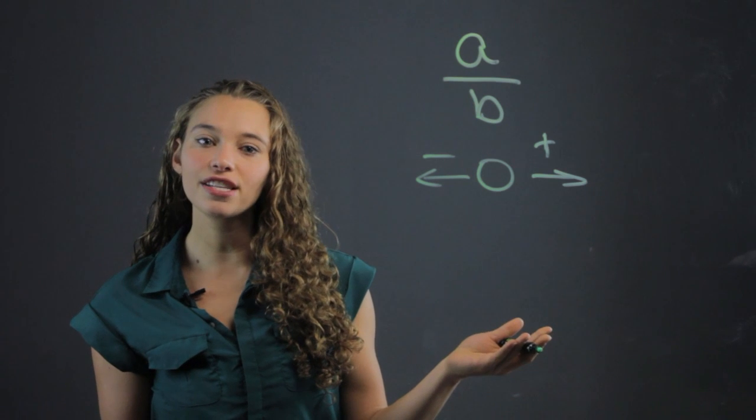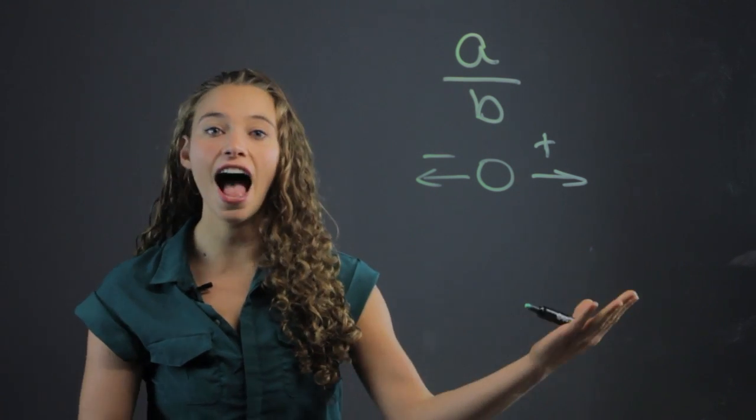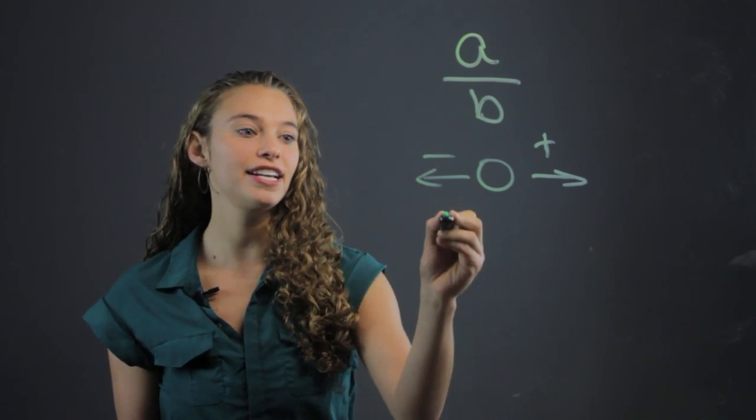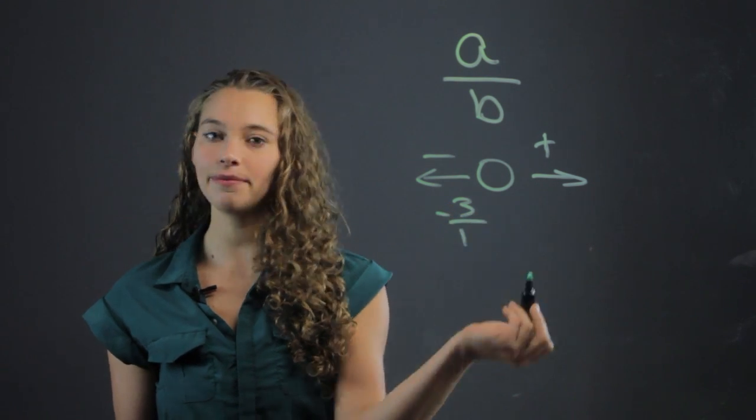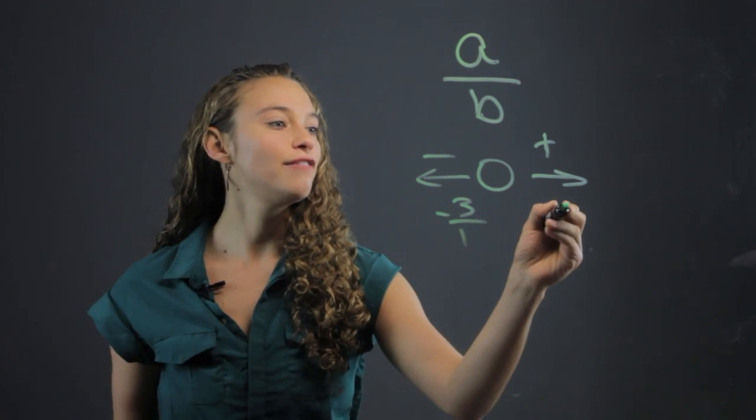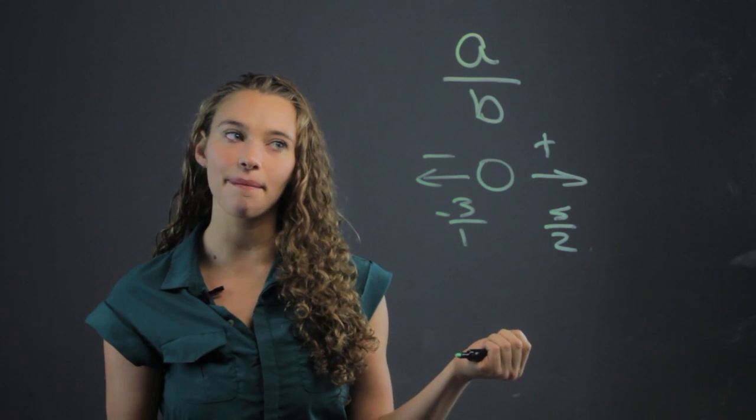So negative three is a rational number, five halves is a rational number because you can write negative three as negative three over one. You can express it as a fraction. Five halves you can write as a fraction, that's a rational number.